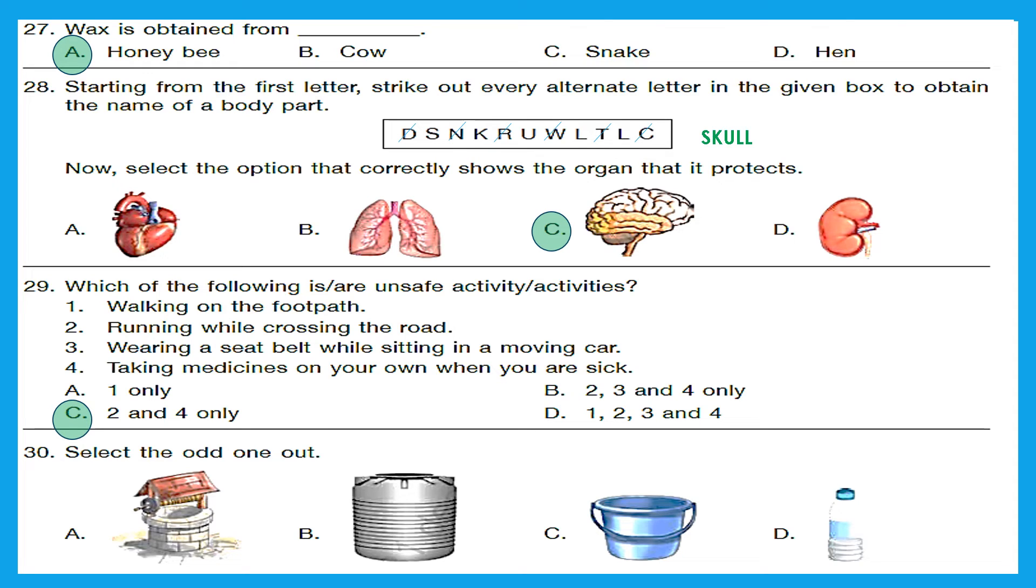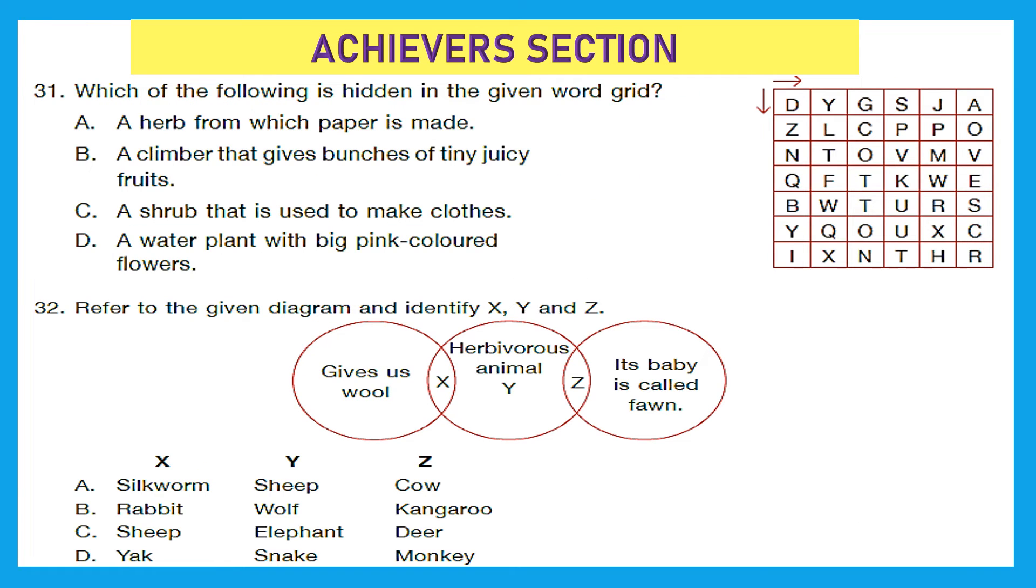Question 30. Select the odd one out. Here we have well, then we have tank, we have bucket and then we have bottle. So tank, bucket and bottle are used for storage of water, while well is used for drawing out groundwater. So option A is odd one out. Achiever section.